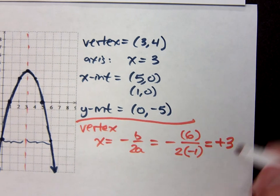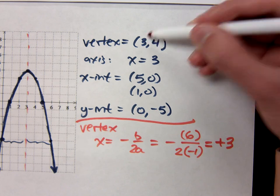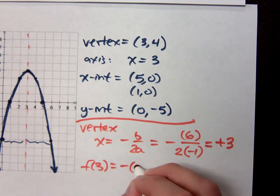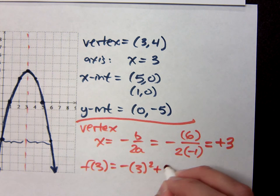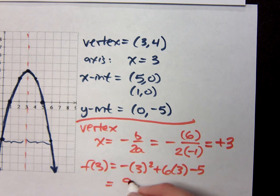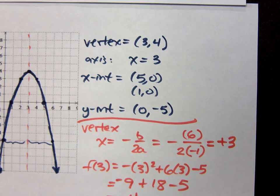Positive 3, which matches up with the vertex I have here. If you do f of 3, that's negative 3 squared plus 6 times 3 minus 5. 9, negative, plus 18 minus 5, gives you 4. So does that match up with my vertex? Everything is connected. That's crazy.